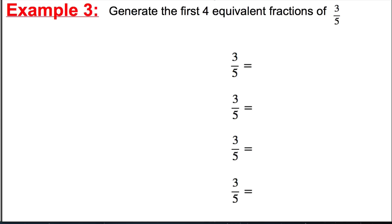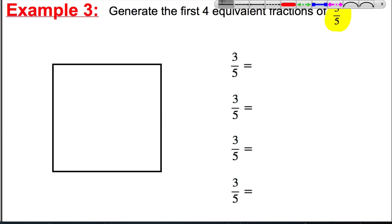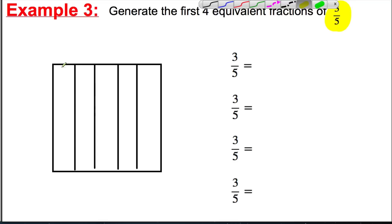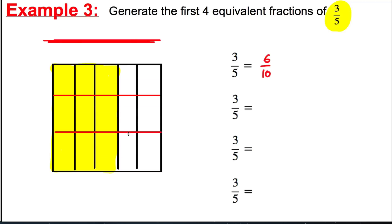Okay, last example — we'll do a slightly trickier one. We're going to find the first four equivalent fractions of three fifths. Draw a nice square on the page and let's represent three fifths — split the picture into fifths vertically. We want three fifths, so colour in three of those sections. First, split it into two parts horizontally, and we see that three fifths is the same thing as six out of ten. Then split it into three parts horizontally, and we see it's the same as nine out of fifteen.